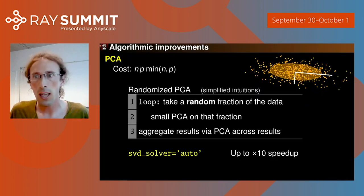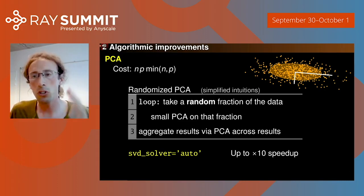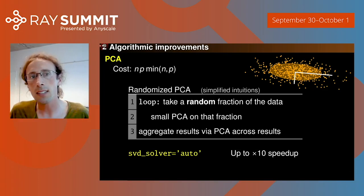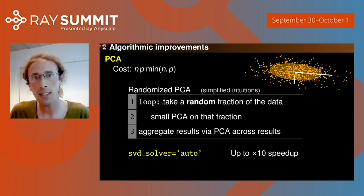Our first focus is on better algorithms, because better algorithms allow better use of the same hardware. Take an example of principal component analysis. PCA reduces the data by finding the directions of maximum variance. Its computational cost scales as N times P times the minimum of N and P, so it's quadratic in one of the two dimensions and can become costly.